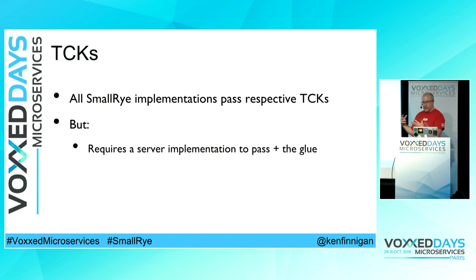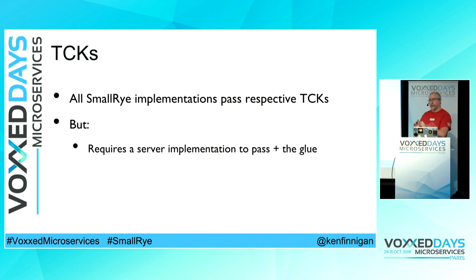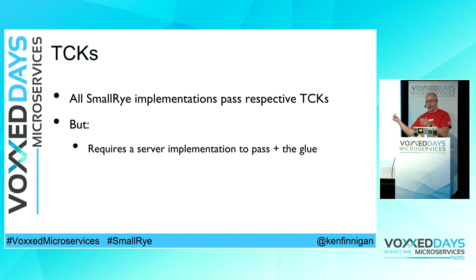That's how we get around to doing the TCKs. If you were to create your own server implementation, once you've done that glue, you would also want to run the TCK tests against your own server to make sure it's behaving as you expect. And that's what we do with Thorntail — after we've included all the SmallRye pieces, we run the full TCK for each sub-specification to make sure it's working as expected in SmallRye.